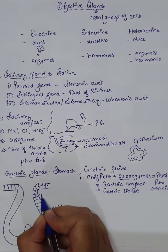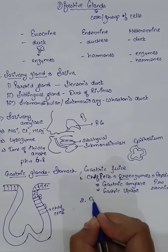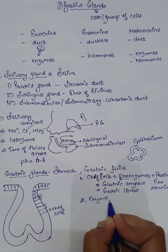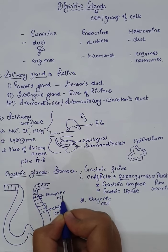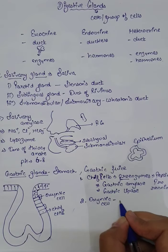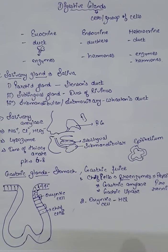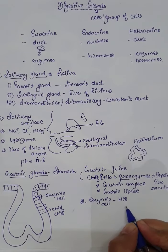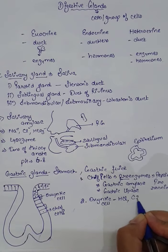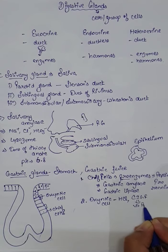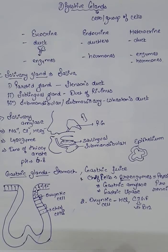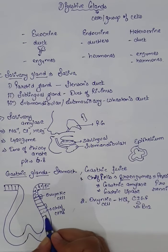Some elongated cells called Oxyntic cells are also present. Oxyntic cells are involved in the secretion of hydrochloric acid (HCl), which maintains the acidic pH in the stomach. They also secrete intrinsic gastric factor, which is helpful in the absorption of vitamin B12.